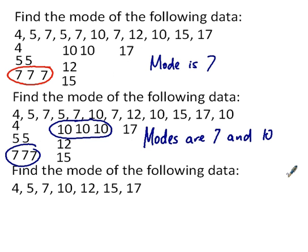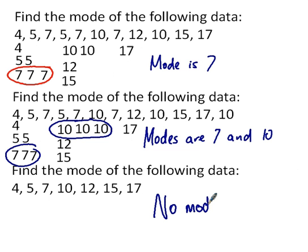Okay, in the last example things have changed again. We see that there is now only one of each number: 4, 5, 7, 10, 12, 15, and 17. Each of those only appears once, or they have a frequency of 1. That means that there is in fact no mode — there are no numbers that appear more frequently than any others, so it's simply no mode.